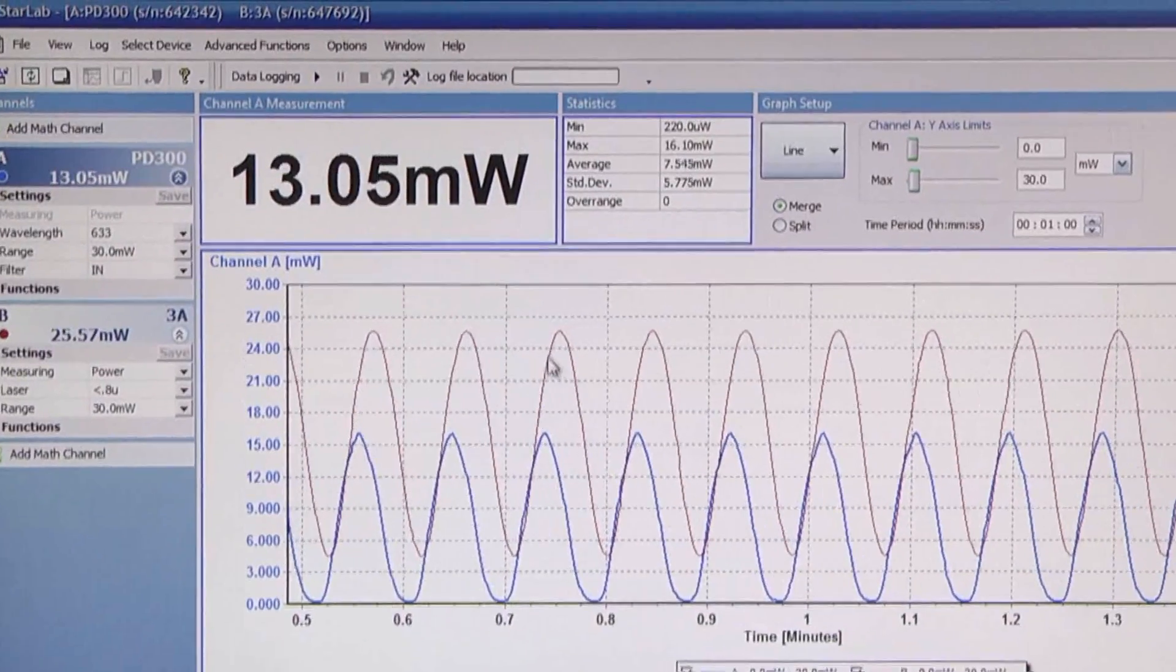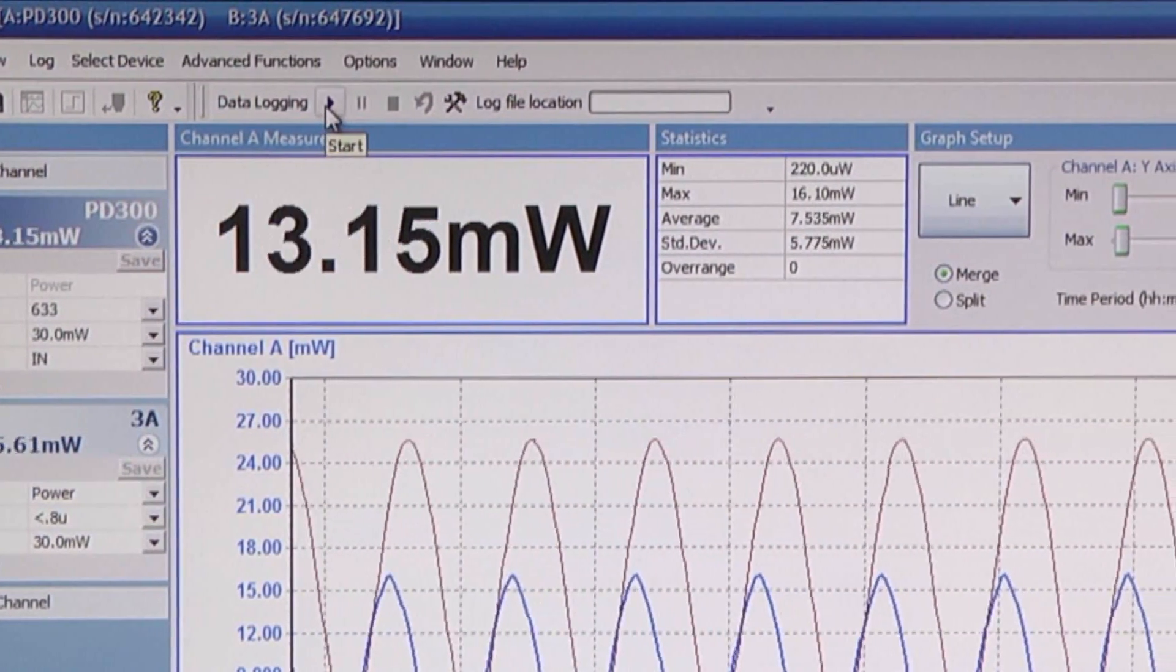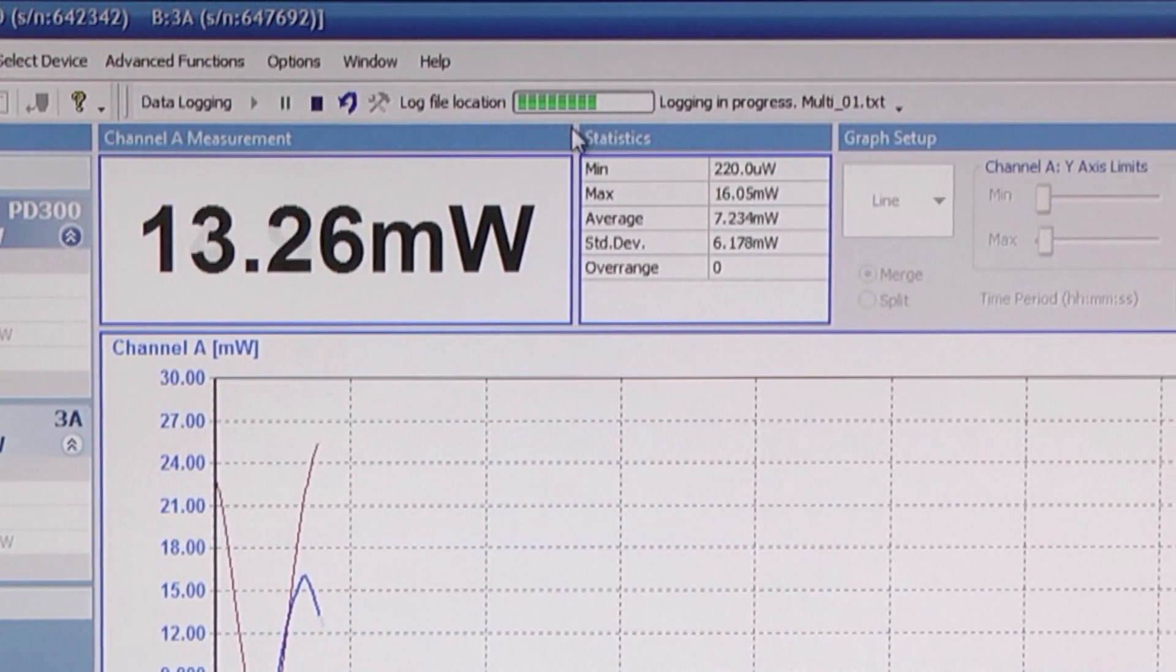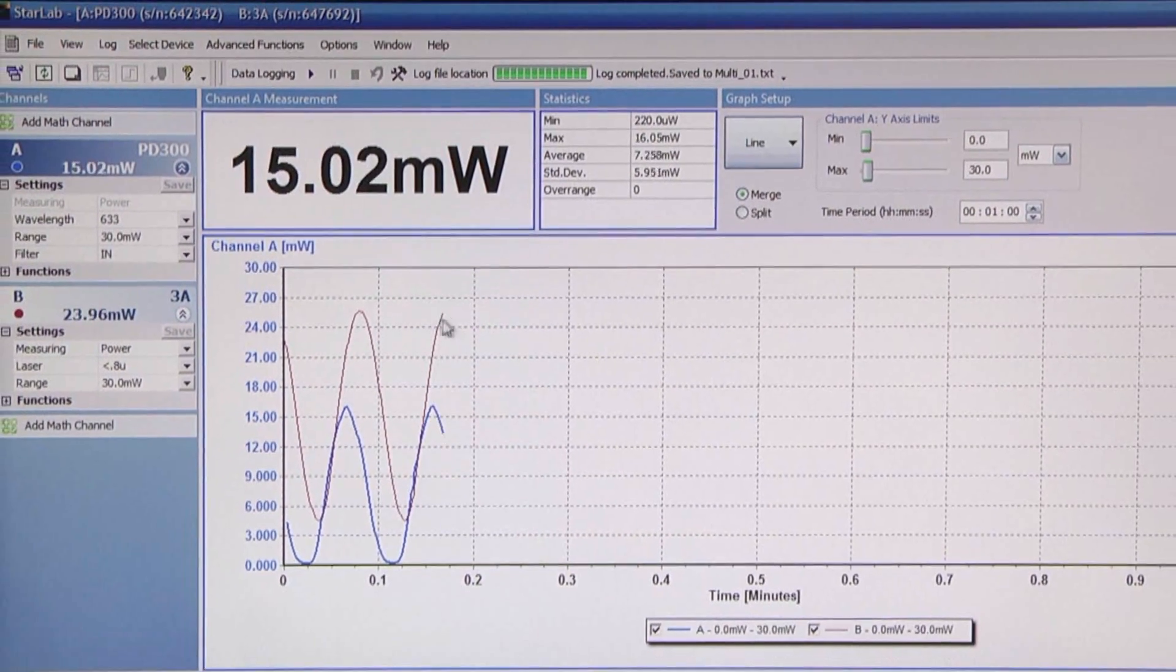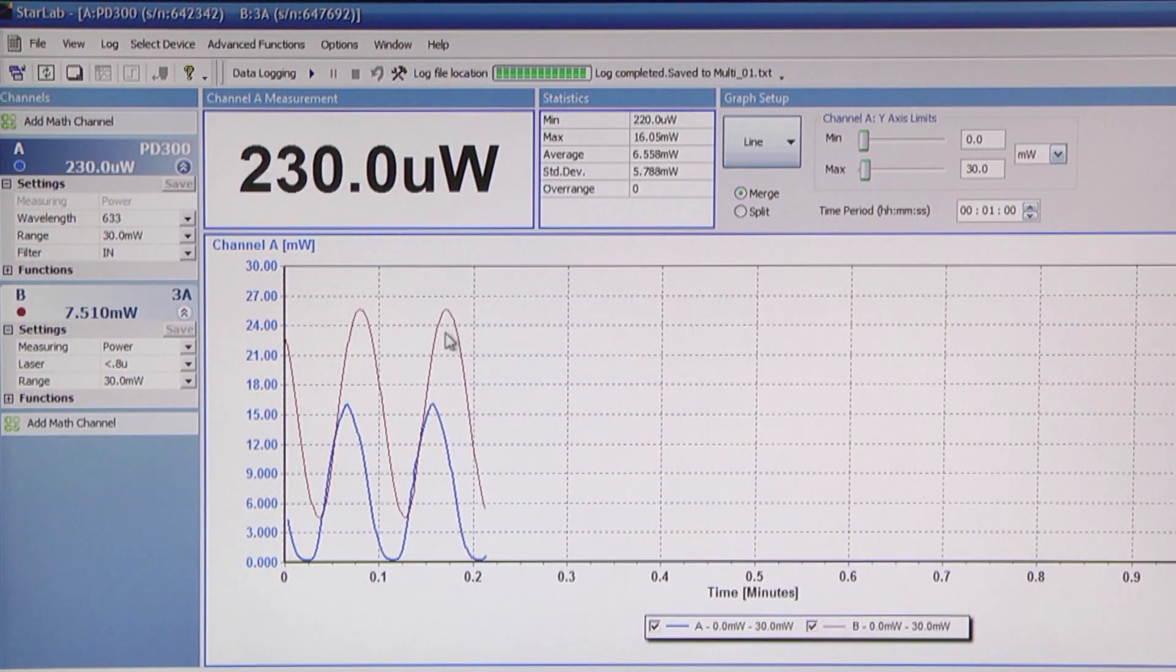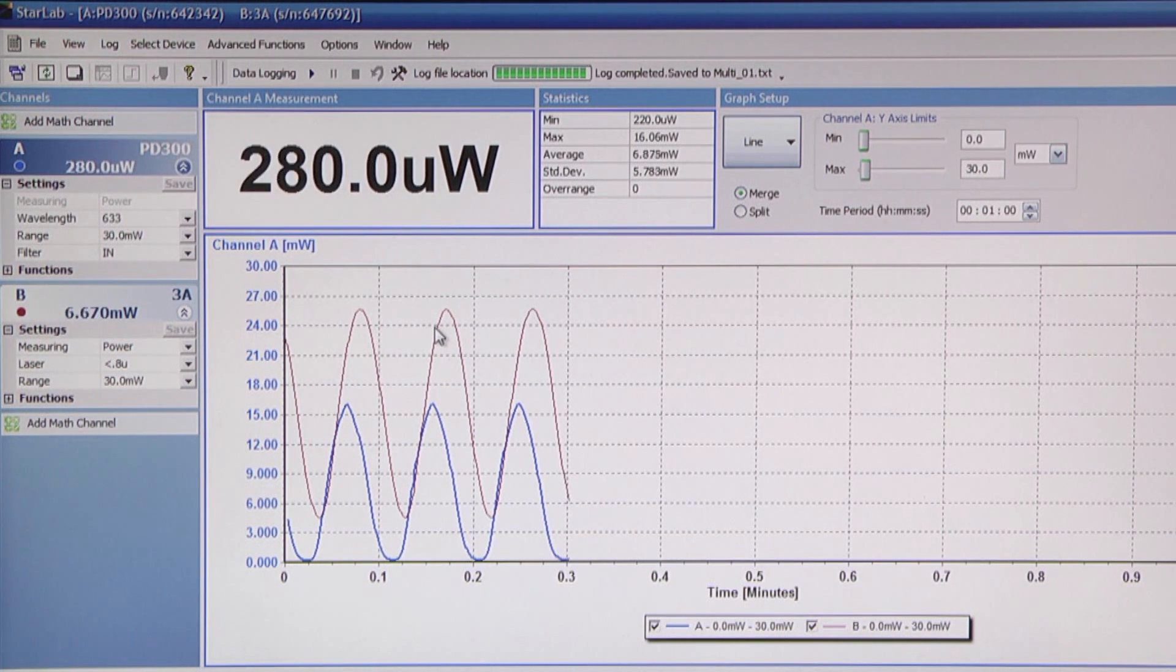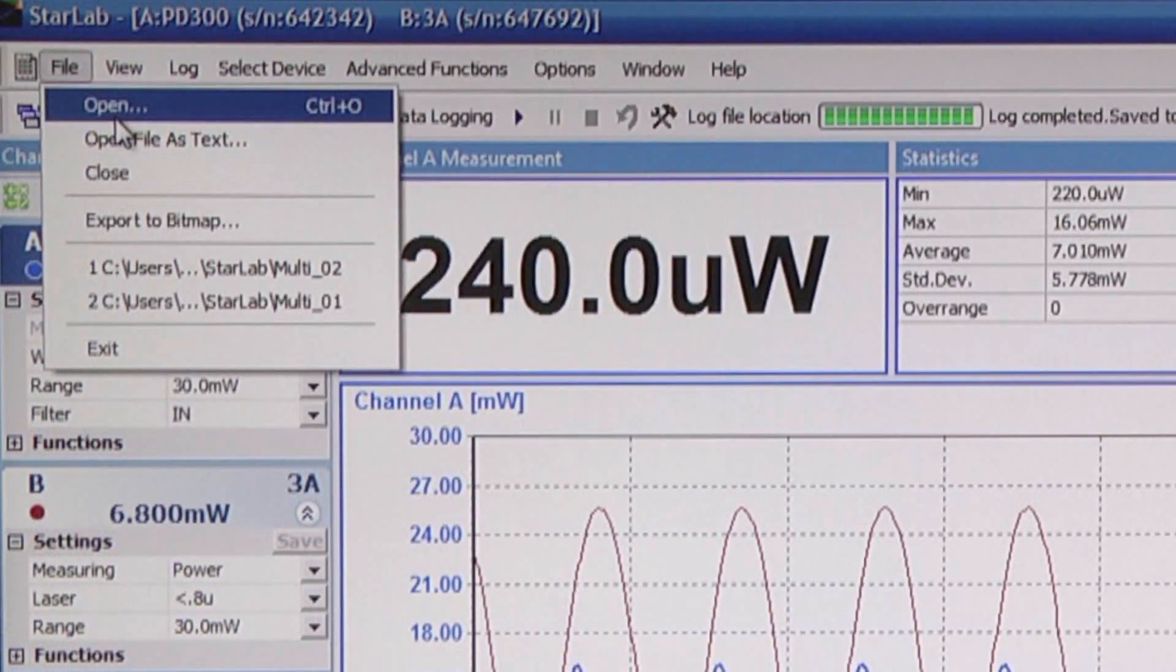Now let's click the data log start button to start saving the 100 measurements into the log file. The progress bar fills up until the log is complete. Note that the logging settings are independent of the settings of the graph screen. The logging is finished but the graph continues.